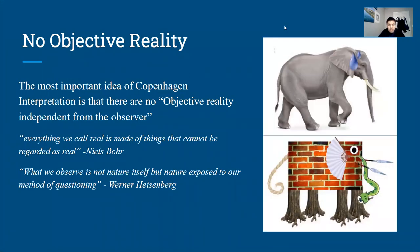The most important idea of the Copenhagen interpretation is that there is no objective reality independent from the observer. As Niels Bohr said, everything we call real is made of things that cannot be regarded as real. The idea is that if you do not observe a system, then its reality is meaningless — you cannot describe things that you don't know. True reality is not reality itself, but what we see. Reality is dependent on people's observation, so if you are not seeing anything, how can it be regarded as reality?